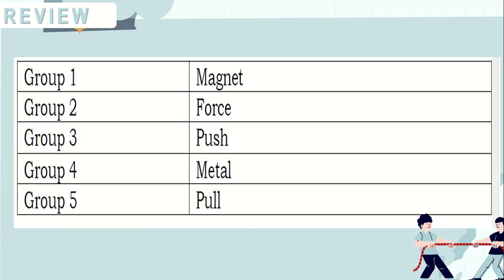For Group 1, magnet. Group 2, force. Group 3, push. Group 4, metal. And Group 5 is pull.